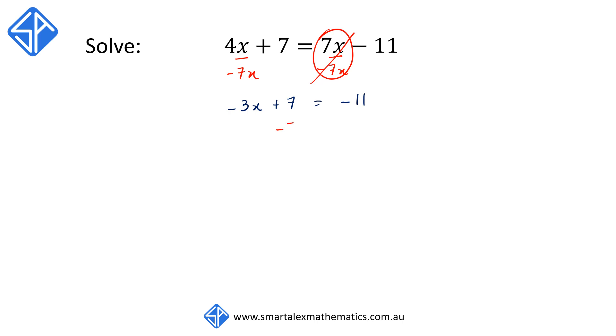The left hand side, 4x minus 7x, will give us negative 3x plus 7 is equal to negative 11. Next step we subtract 7 from the left and the right hand side. The 7 will disappear from the left so that we now have negative 3x is equal to negative 18. To get rid of the negative 3x we divide both sides by negative 3. This will give us a positive x is equal to 6.